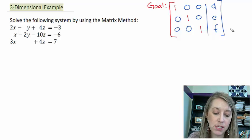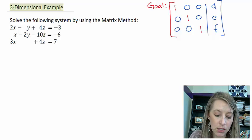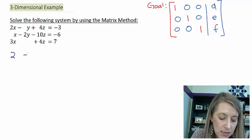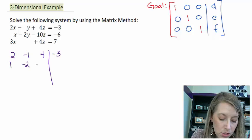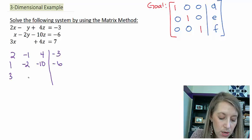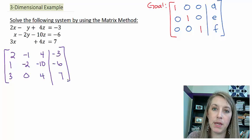So my first step is to put this into an augmented matrix. I have 2x minus 1y plus 4z equals negative 3; 1x minus 2y minus 10z equals negative 6; and 3x plus 0y plus 4z equals 7. Here is my augmented matrix.